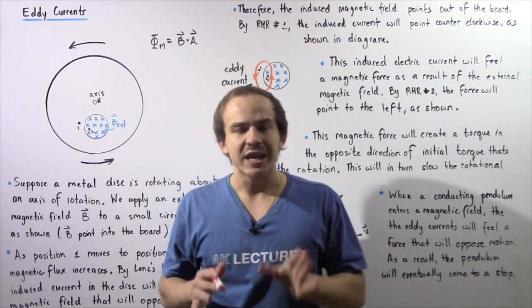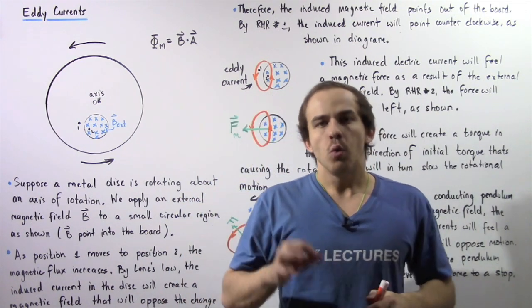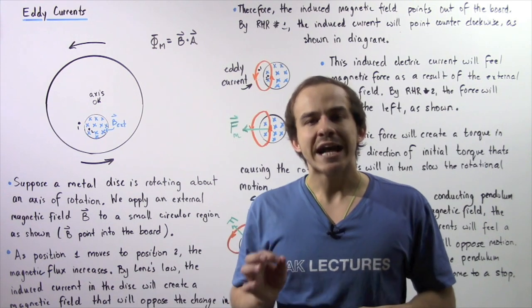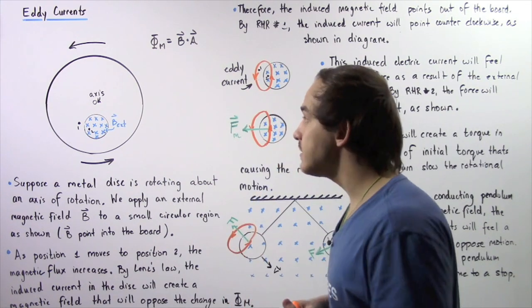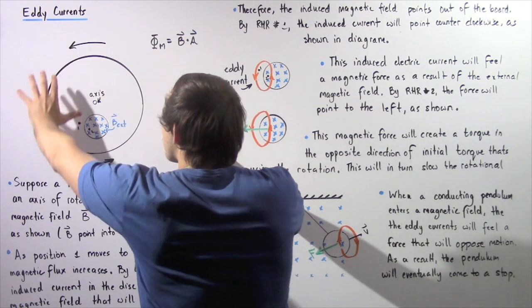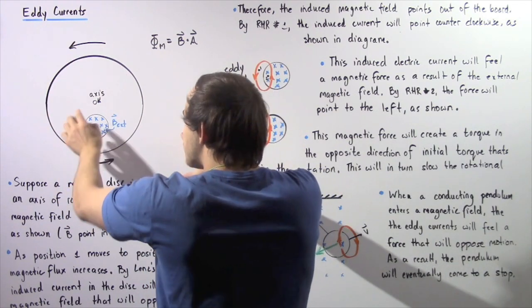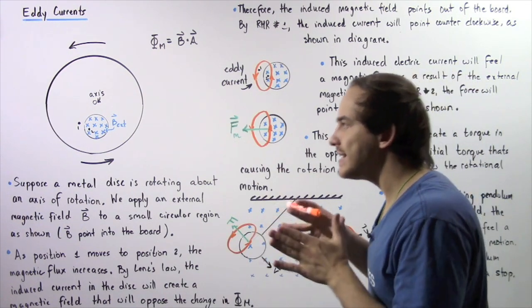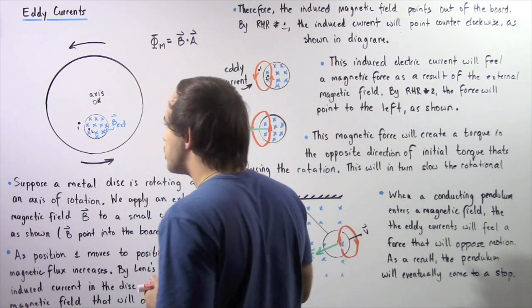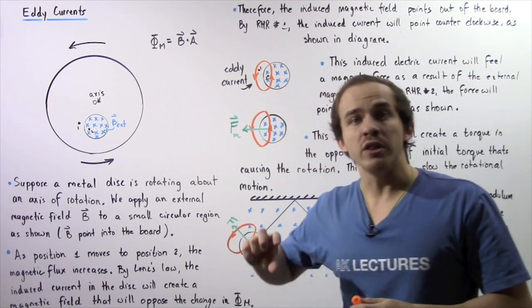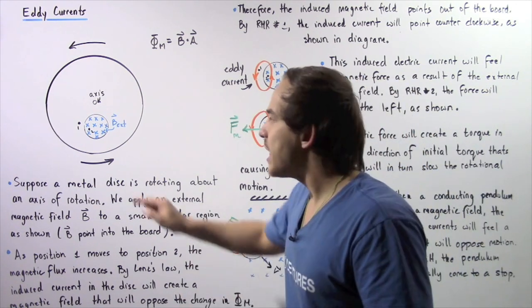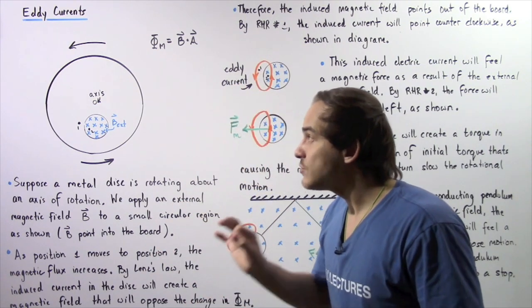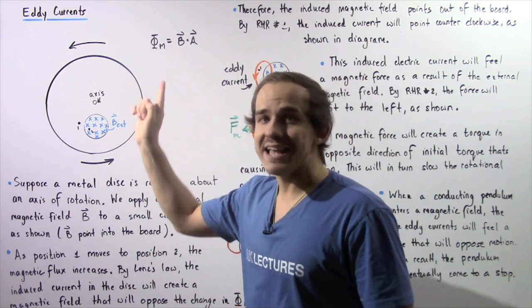From Faraday's law of electromagnetic induction, whenever there is a change in magnetic flux, that will induce an EMF. So as our disc rotates through this region that has a magnetic field, an EMF is induced within that region, and that EMF will in turn induce an electric current that will flow through that region. Those electric currents are known as eddy currents.